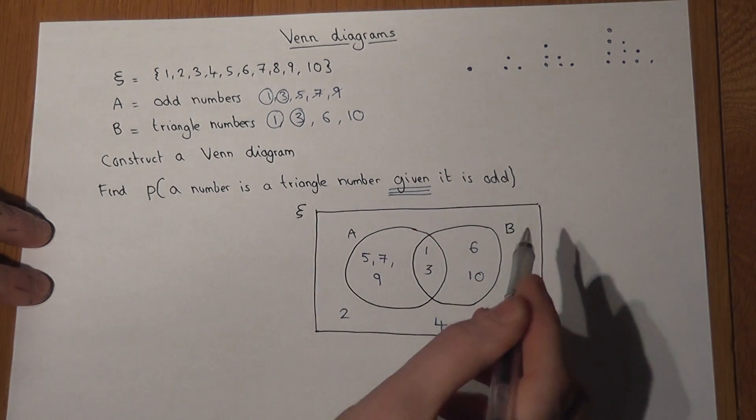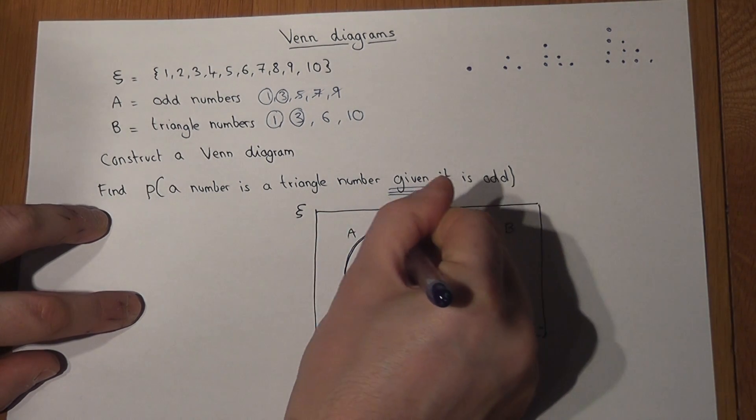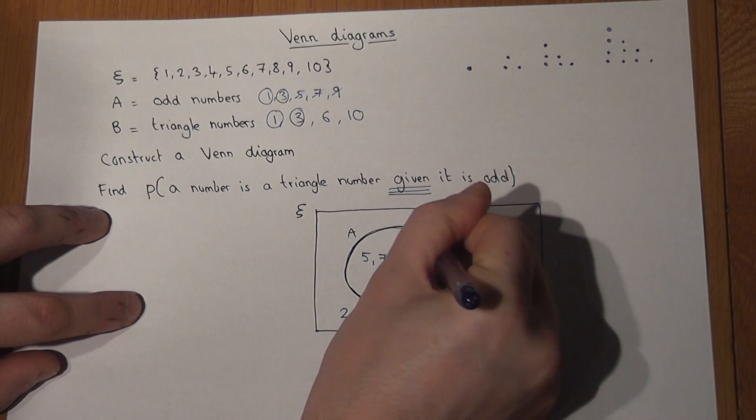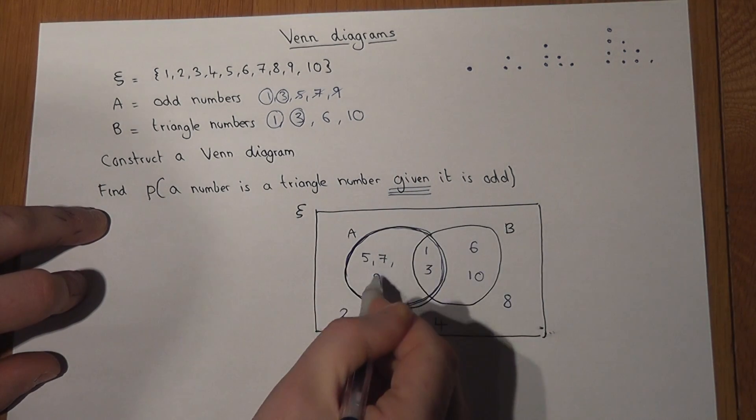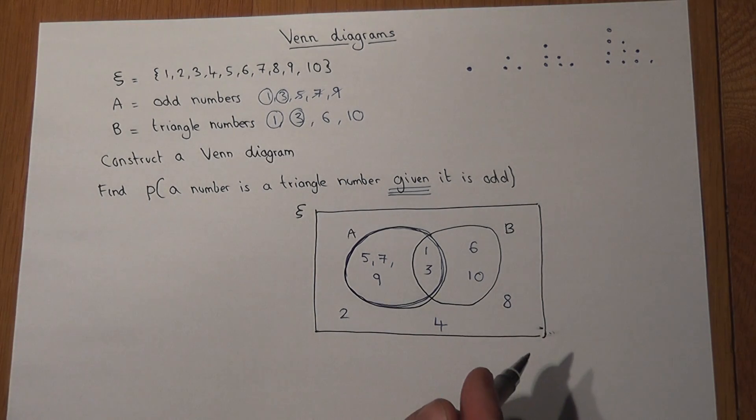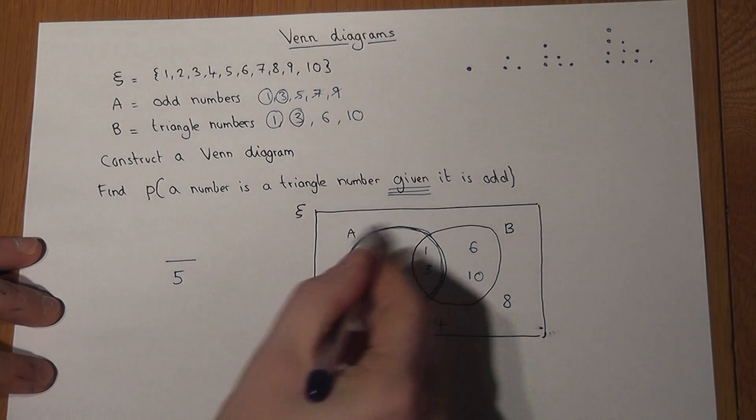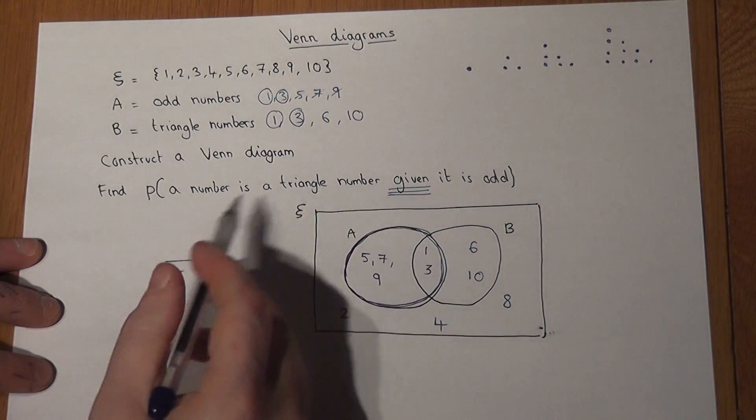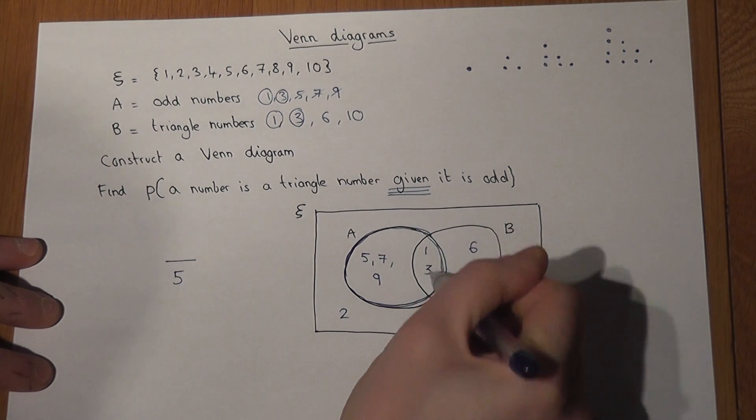Given it is odd means just look at the odd circle. Zone in into that and nothing else. In that circle there are 5 numbers. And of those 5, some are also triangle numbers. These 2 here.